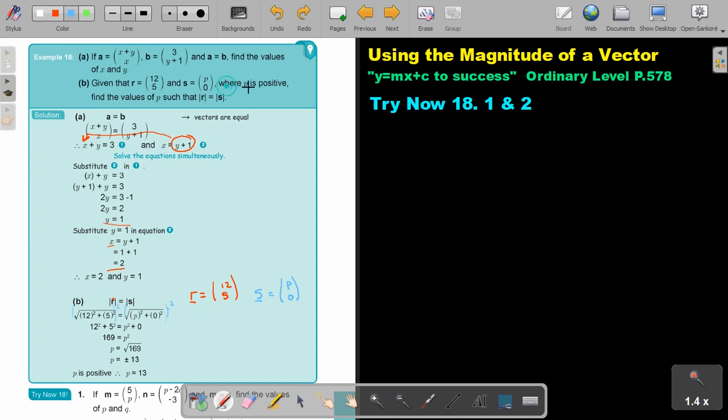But remember, where P is positive. So therefore, the positive is only 13. Stop the video and do try now 18, number 1 and 2. You can continue with the video as soon as you are finished.